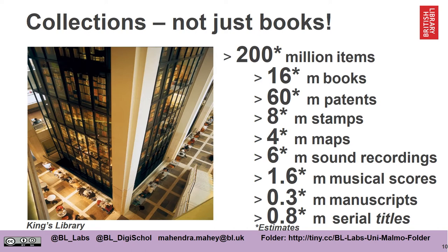Our collections are vast — we're probably the first or second largest library on the planet. This is just an estimation, but we have over 200 million items. 16 million of them are books, around about 9%. And as you can see, we have many other things like patents, stamps, maps, sound recordings and musical scores, manuscripts and serial titles. So the library doesn't just contain books.